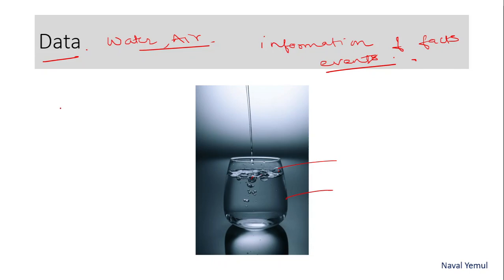Every click on your mobile phone is generating data. Every like is generating data. Every post is generating data. Every transaction you are making on PhonePe, Google Pay, or Paytm is generating your data. So everywhere we have data.